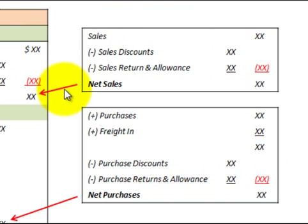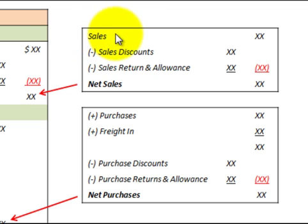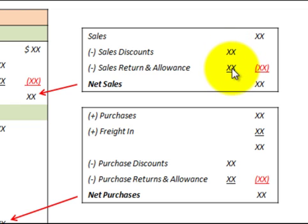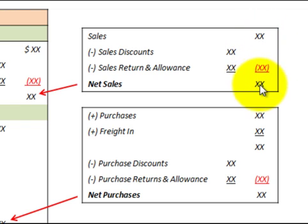If we look over here at a little review chart: we get our sales and subtract out the sales discounts and the sales returns and allowances, subtract them from the sales, and we get net sales for the period.